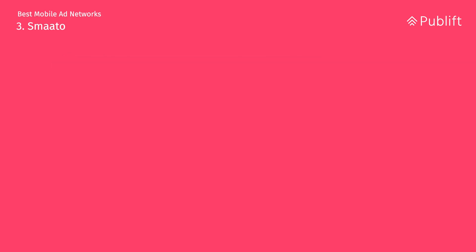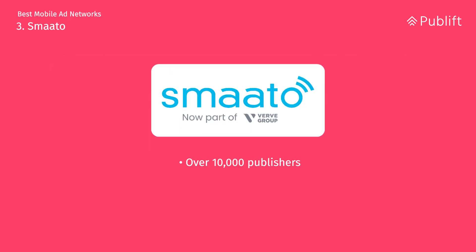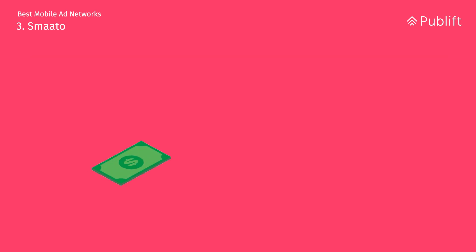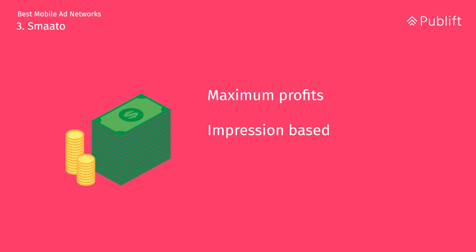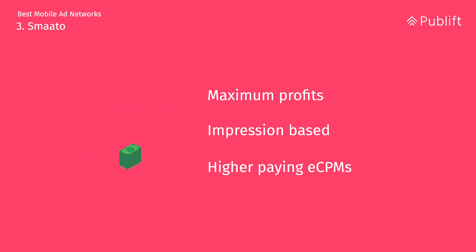Number three: Smato. Smato has over 10,000 publishers and 90,000 advertisers, ensuring you'll sell ad space. The Smato publisher platform also creates super auctions, showing you the highest demand for impressions so you can get maximum profits on an impression-by-impression basis, resulting in higher paying aCPMs.